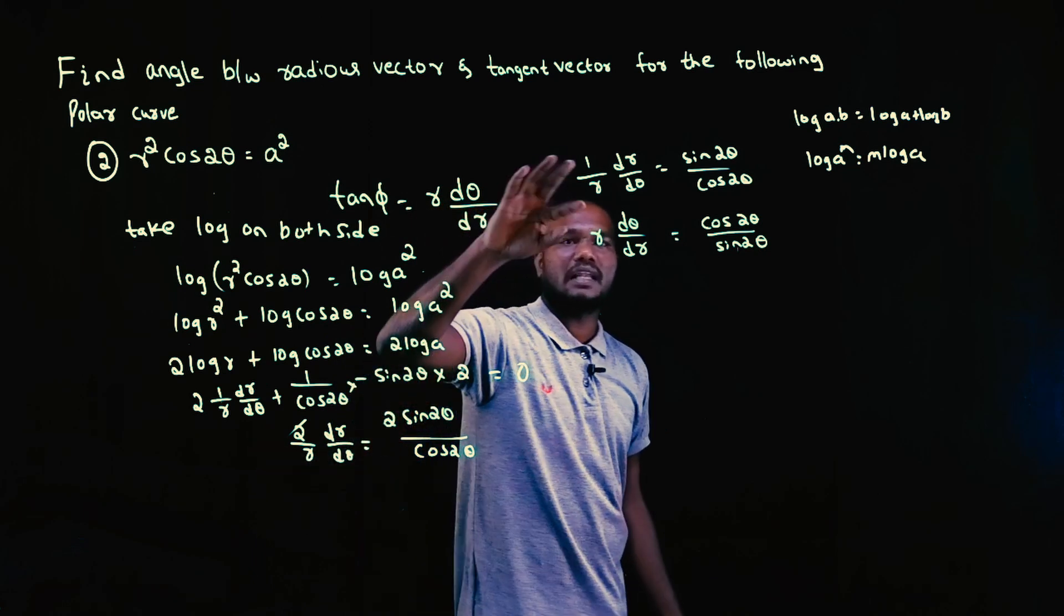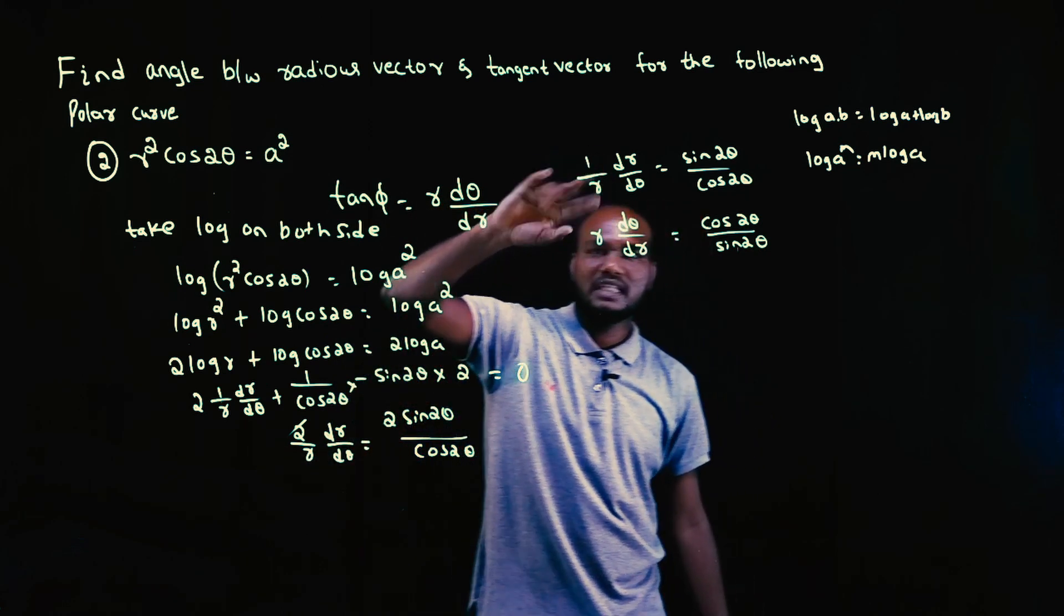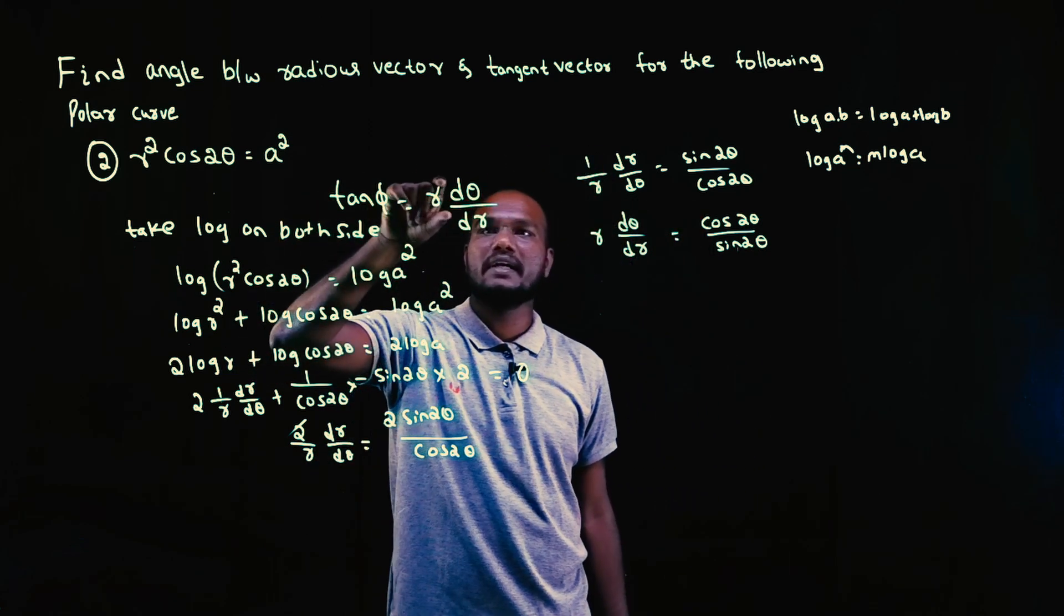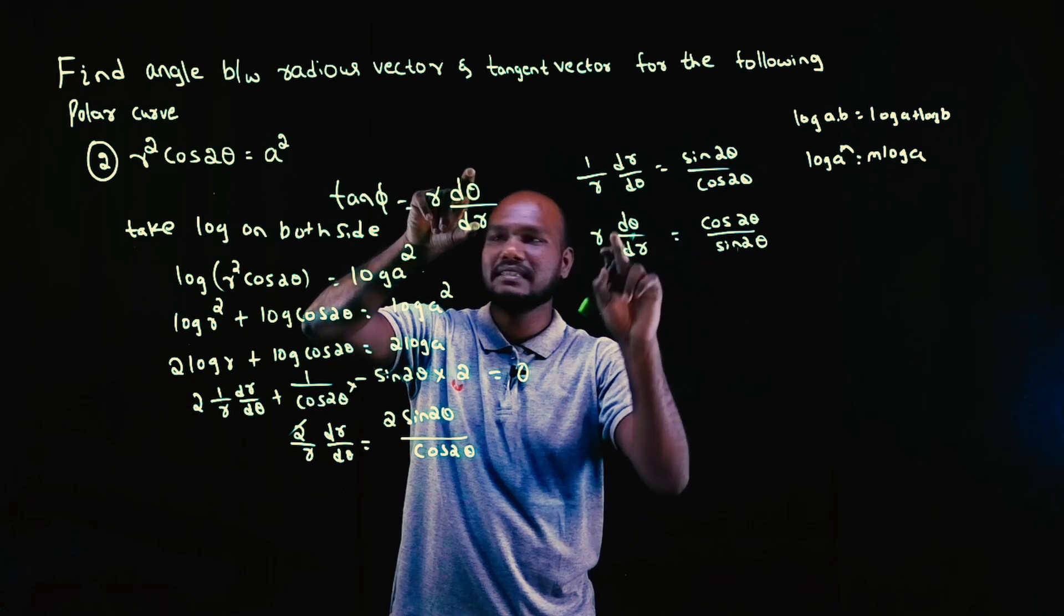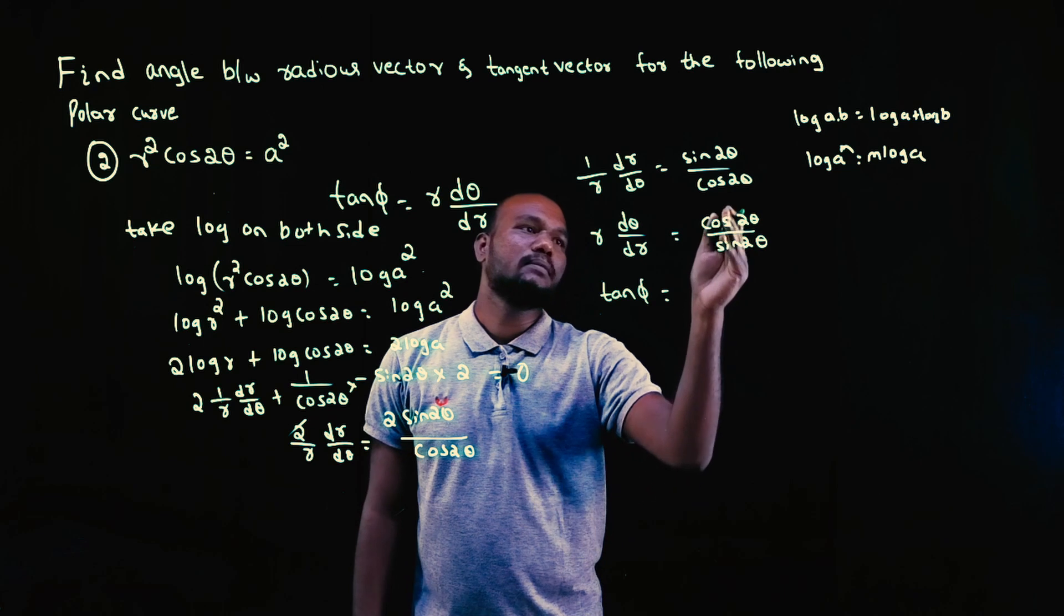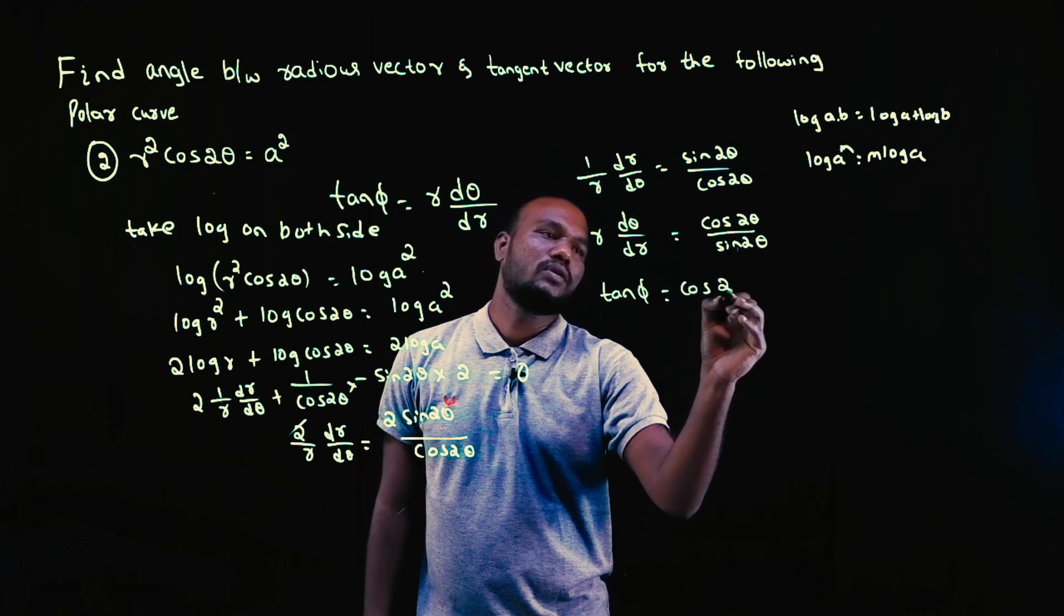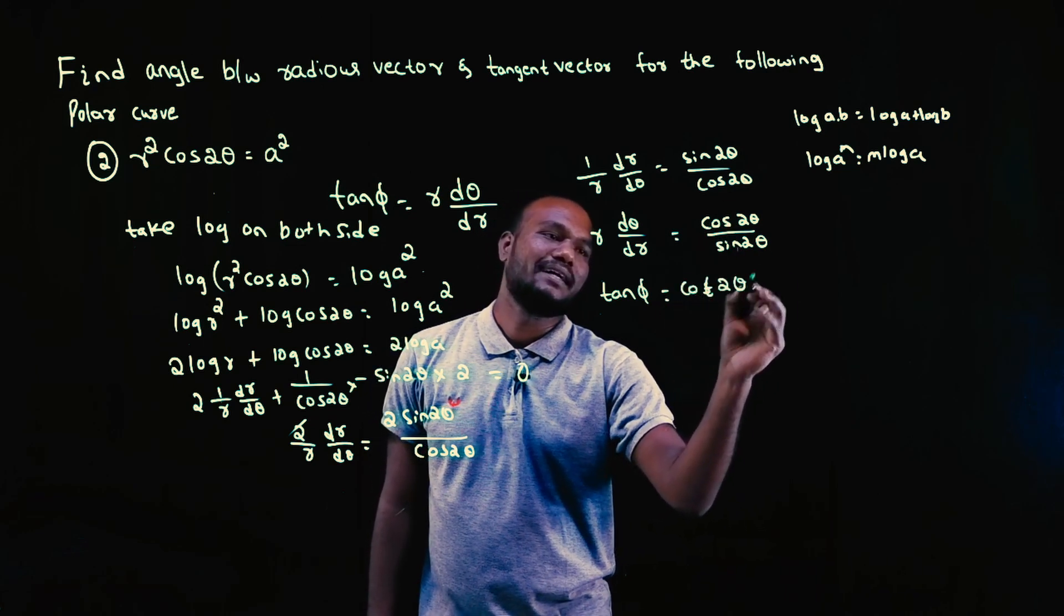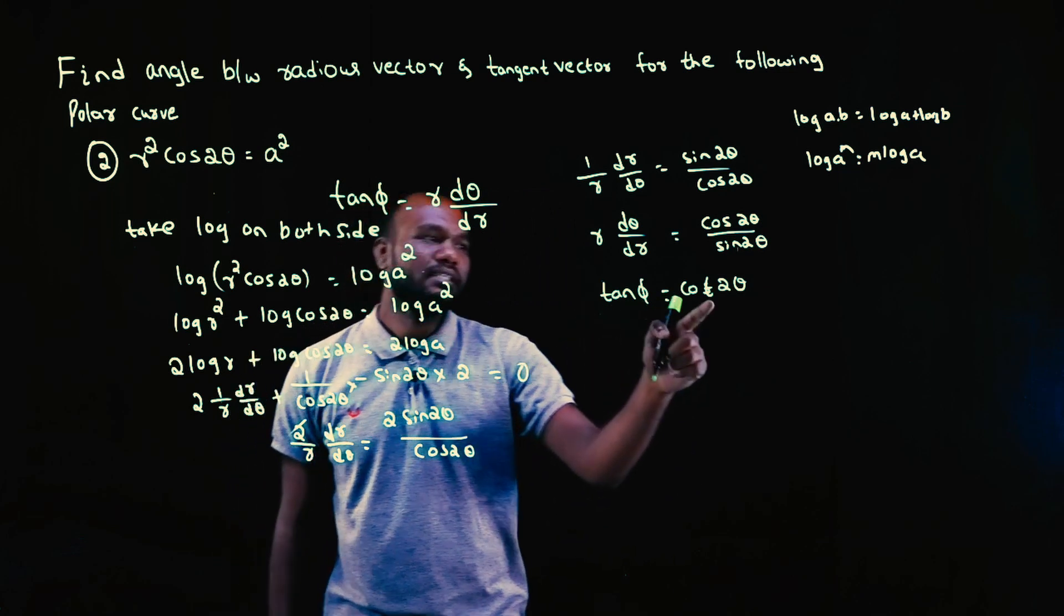Whenever you take the logarithm, if you just reverse at the last step, you will get r·dθ/dr. What is this? This value is itself tan φ, right? So tan φ equals cos(2θ)/sin(2θ), which is cot(2θ).